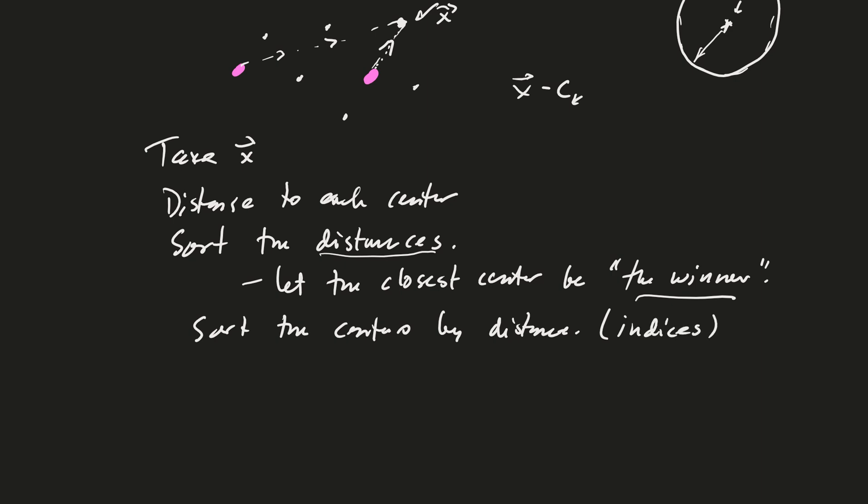I might have I1 might be the closest to CI, or I'm sorry, to the data point X. And then I2 might be the next closest to X, and I3 is the next closest to X, and so on. And we're going to take the K closest.